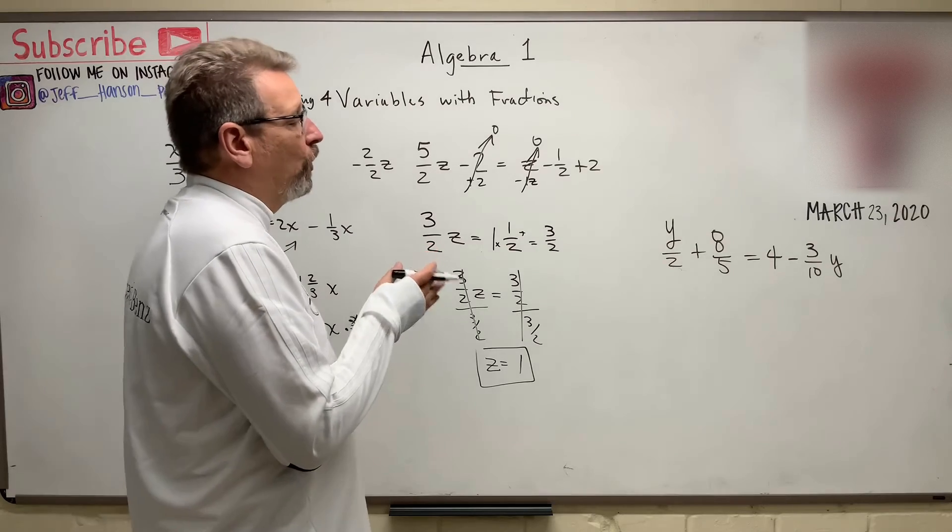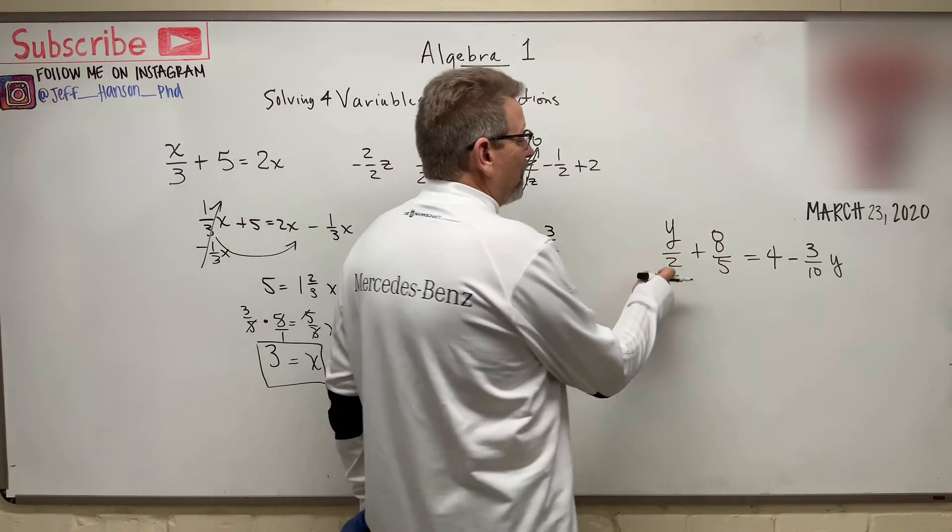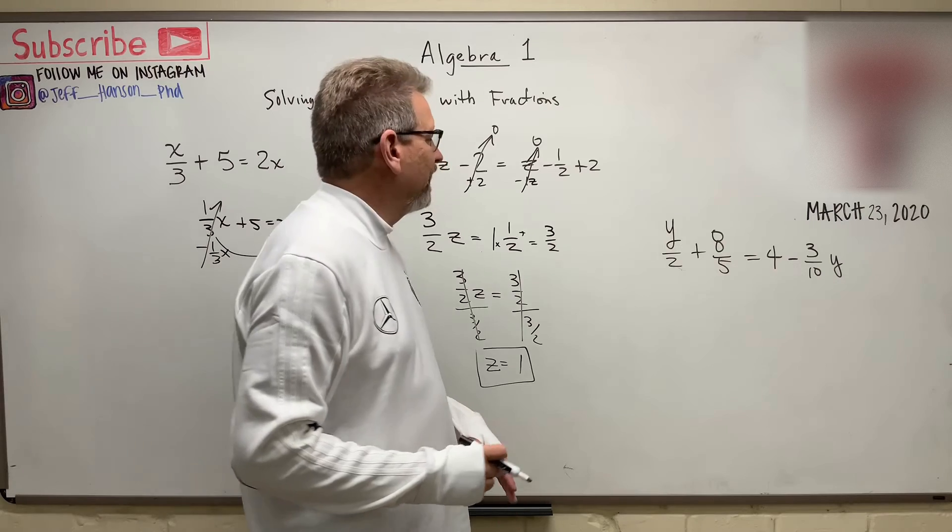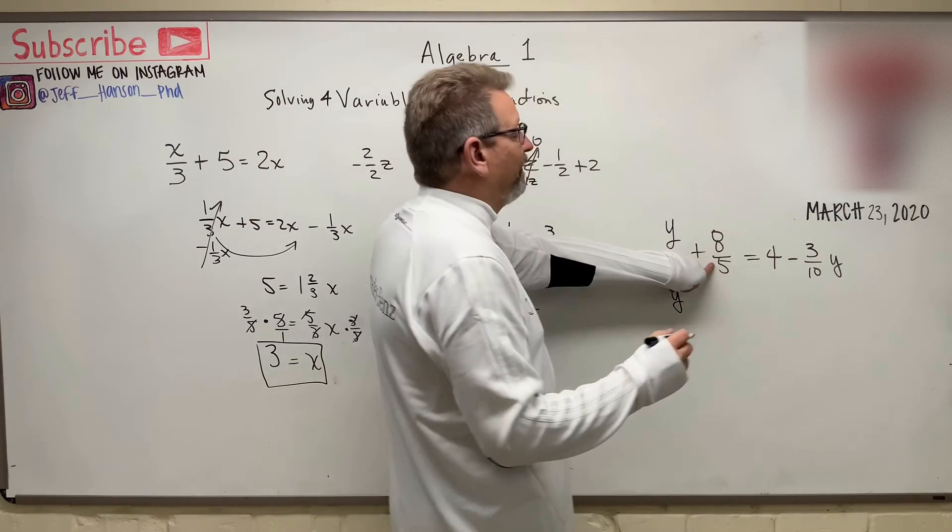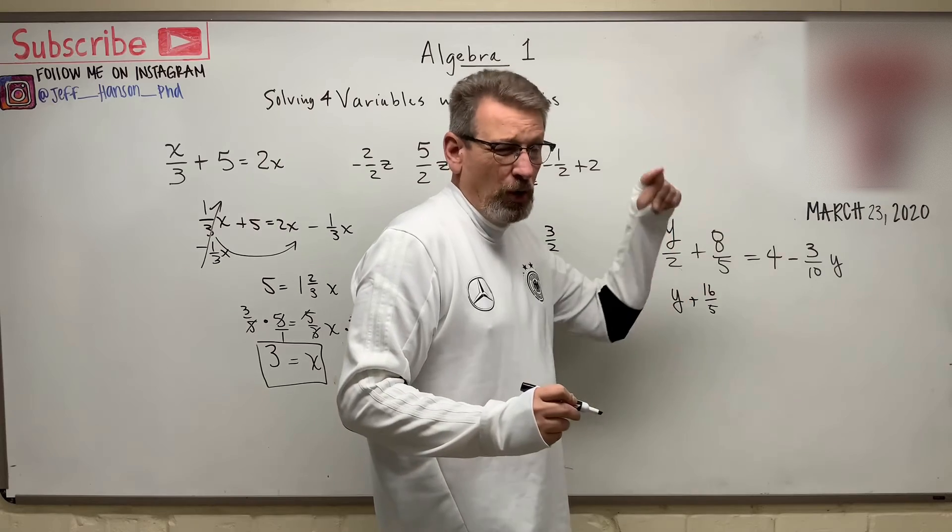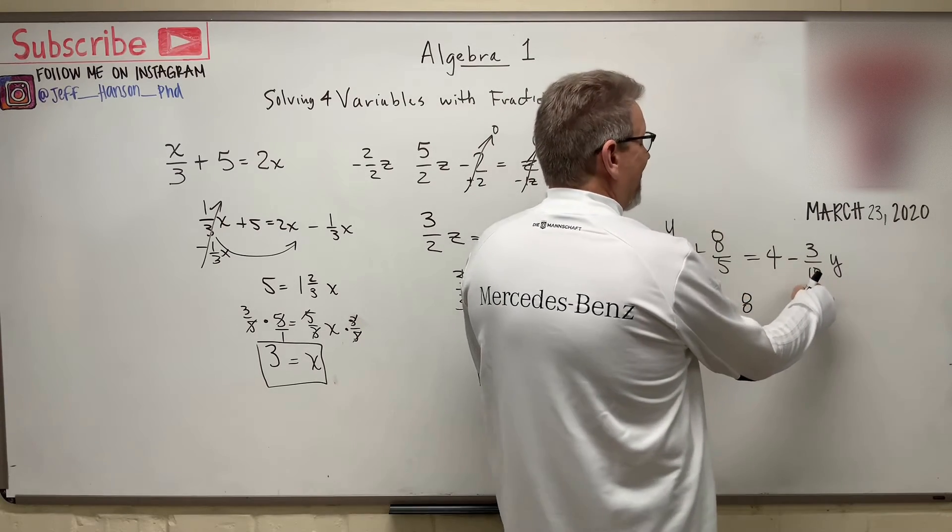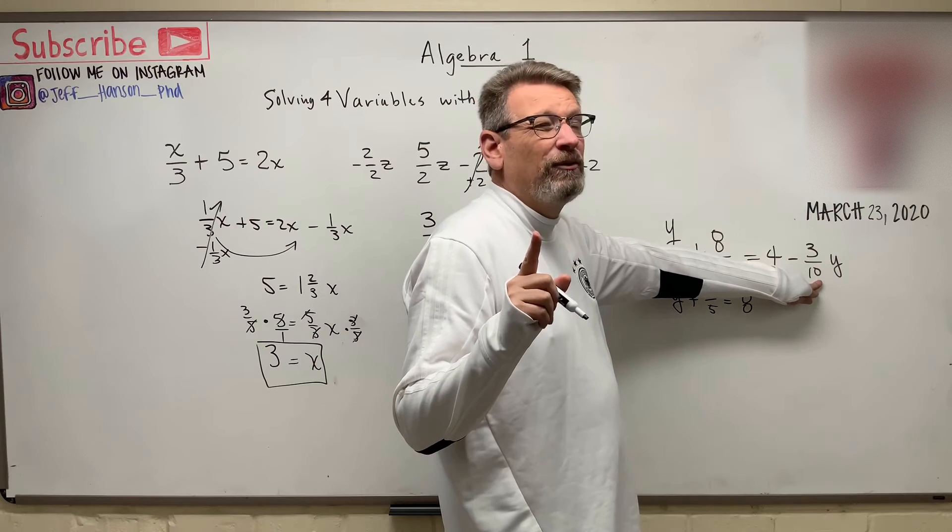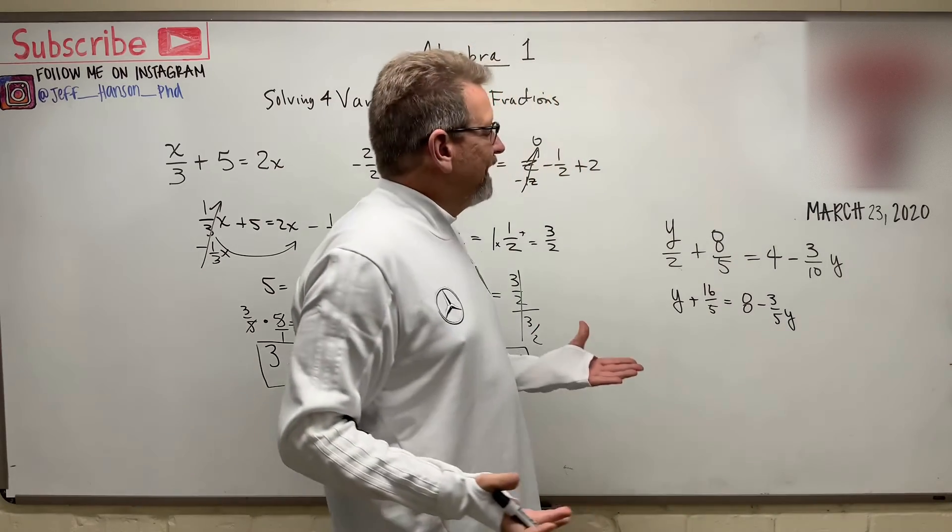Now, this time I've got a 2 underneath my Y. I don't like that at all. I like Y to be sitting on the ground and not to be over anything. Now, there's a couple of tricks you can do. You can multiply every single thing in that equation all the way across by 2. Let's do that. Let's just see what we get. We get Y because if I multiply that guy by 2, the 2's cancel out. If I multiply that by 2, what do I get? 16 fifths, because you just multiply the top. Equals, what's that times 2? 8. And then what's that times 2? That times 2 is going to be 6 over 10, and 6 over 10 reduces to 3 over 5. Now, does that make anything really easier? I don't know, probably not.